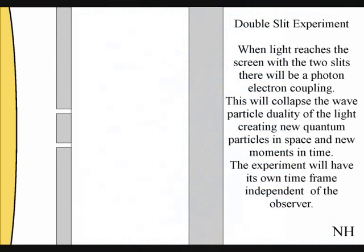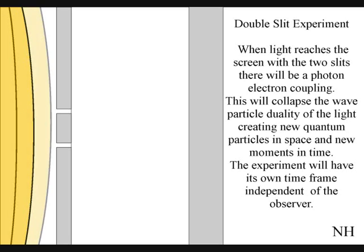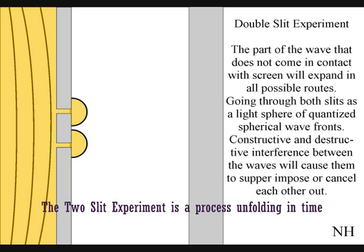The only way to see this happen directly by light is in the two-slit experiment. When the waves reach the screen with the two slits, they will react with the electrons of the screen. This will collapse the wave-particle duality of the light, creating new quantum particles in space, and new moments in time.